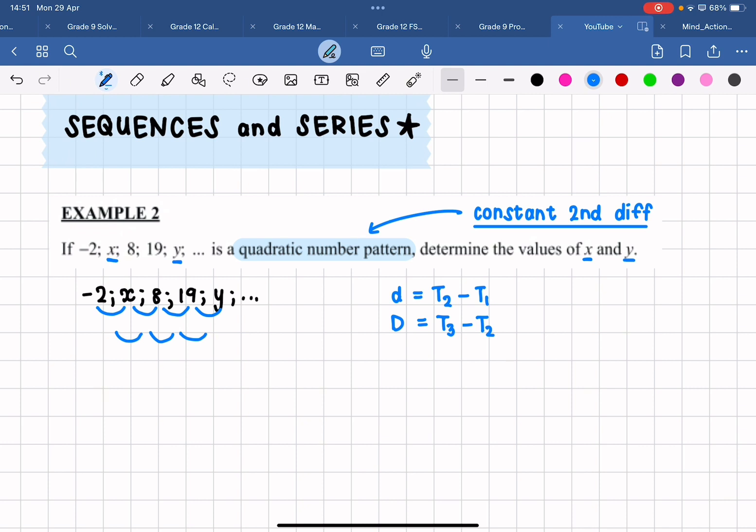So if I am calculating the difference between terms two and one in this number pattern, my second term is x, my first term is negative two. So that difference there is actually going to be x plus two. So that is going to be my first first difference.